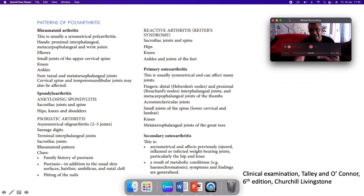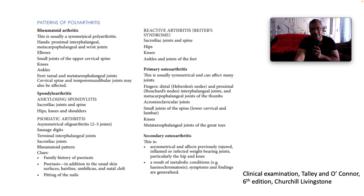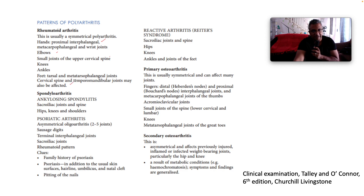Looking at the patterns of polyarthritis: rheumatoid arthritis is the poster child for polyarthritis of the hands. It's the medial polyarthritis, and in the hands we have preferential involvement of the proximal phalangeal joints, metacarpal phalangeal, and wrist joints. It also affects the elbows, small joints of the upper cervical spine, the knees, ankles, and feet — including the tarsal and metatarsal phalangeal joints. C-spine and temporomandibular joints may also be affected.